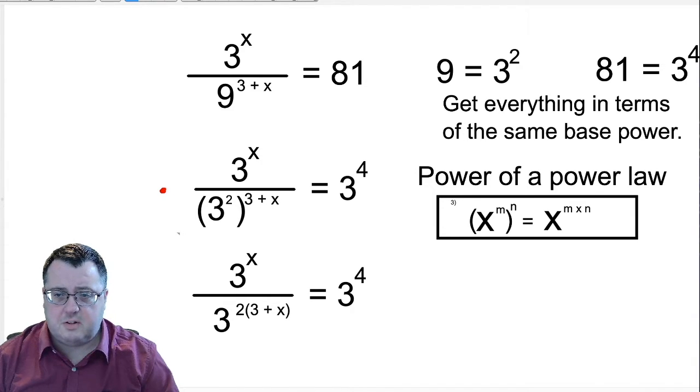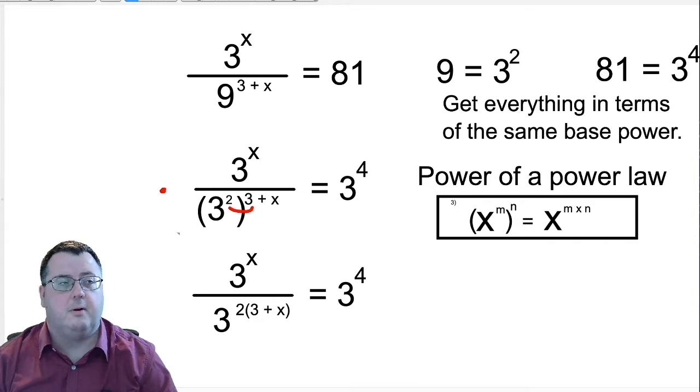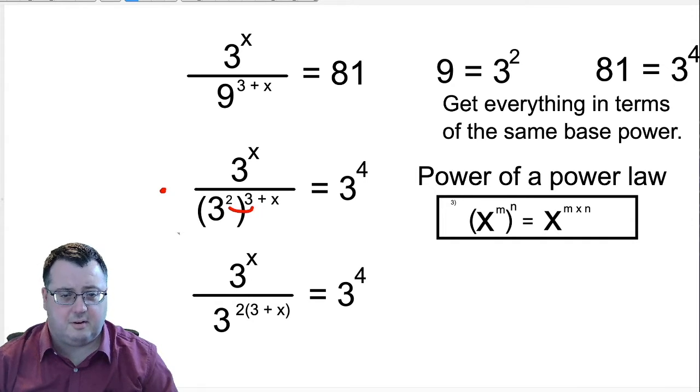Next, I'm going to use the power of a power law, which is the third law, which says that I can multiply the powers when I raise a power to a power. And you can see what's going on here. I'm doing this 2 multiplied by the 3 plus x, which will give me 2 open brackets 3 plus x close brackets. Okay, so we're making progress on this. It might not seem like it, but we are.